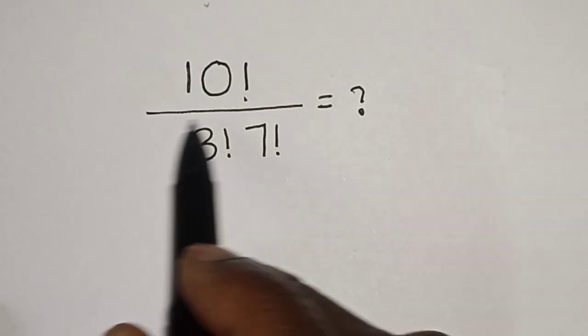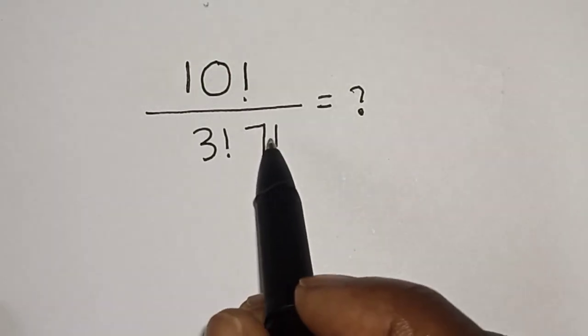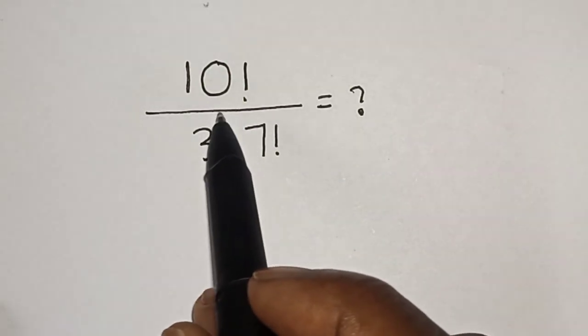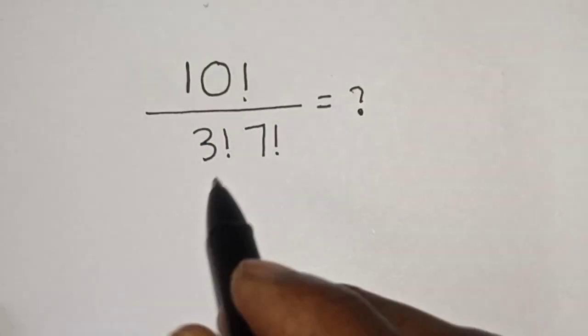10 factorial over 3 factorial 7 factorial is equal to what? Hi everyone, welcome to my class. In this class we want to simplify this factorial problem, but before we proceed please don't forget to like, share, comment and subscribe.